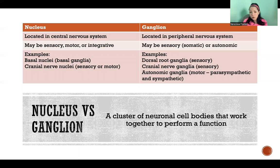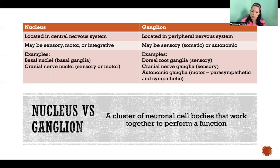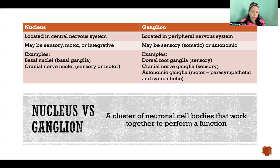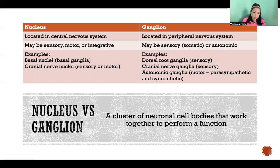Compared to a ganglion, which is primarily sensory — most of them are sensory in the somatic nervous system — but they also can be motor in the autonomic nervous system. Some examples of nuclei include the basal nuclei, also referred to as the basal ganglia. I personally prefer the term basal nuclei, because there is no such thing as a ganglion in the central nervous system, so the term basal ganglia is sort of confusing — they're not actually ganglia, they're nuclei.